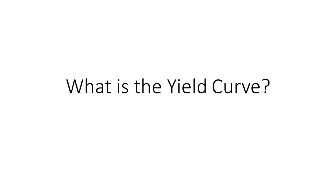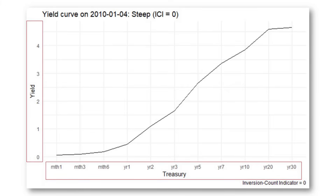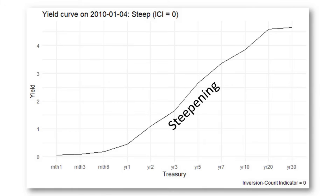This leads us into the yield curve. The yield curve is a simple concept — all we do is plot a chart. The horizontal axis covers all the different maturities, starting from 1 month, 3 months, 1 year, 2 years, and so on. The vertical axis has the yields. Typically shorter-maturity treasuries have a lower yield than longer-maturity ones. The yield curve is simply a line joining all these dots together. Normally the curve is steep, with low yields at shorter maturities and high yields at longer maturities.